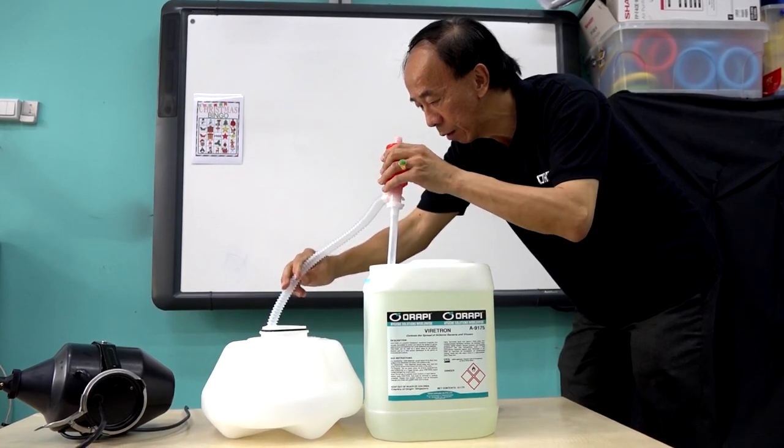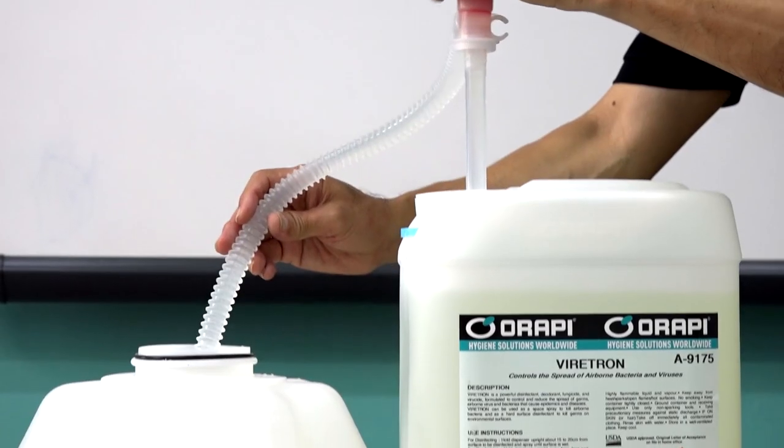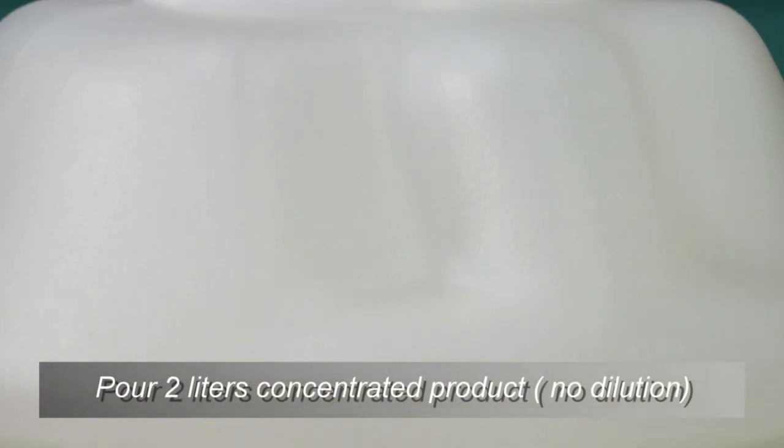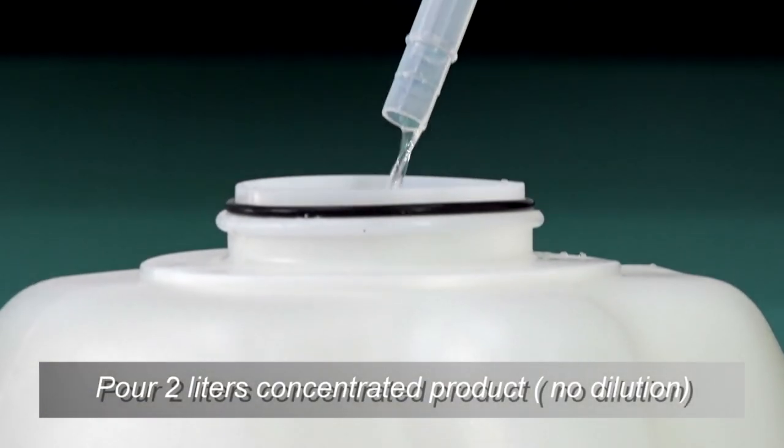For fogging, use Arapi space generator. Fill the canister with two litres of Viratron concentrated product. No dilution is required.